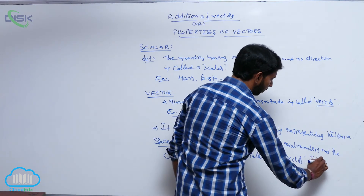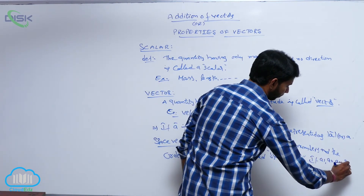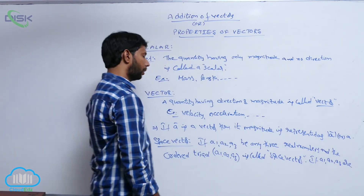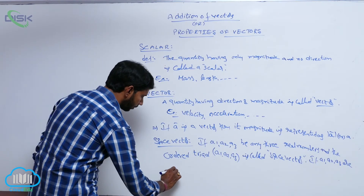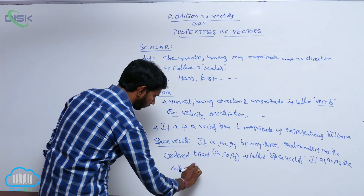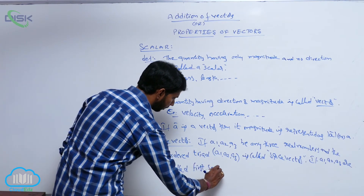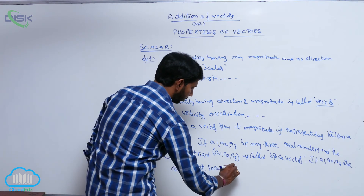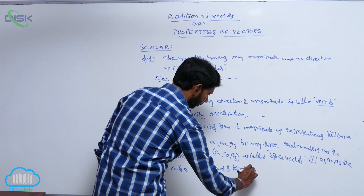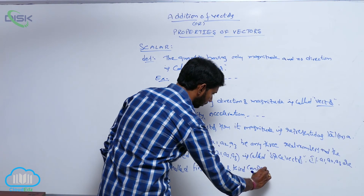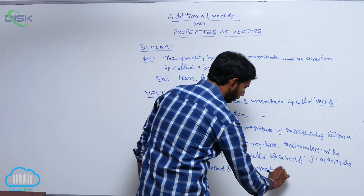Here, a1, a2, and a3 are called the first, second, and third components of the vector.